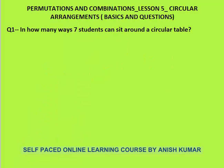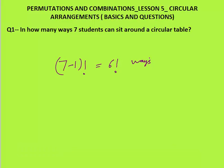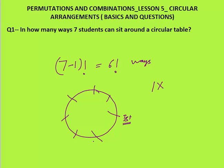Let's discuss some questions based on circular arrangement. Question 1: In how many ways can 7 students sit around a circular table? You can simply say that 7 different things arranged in a circle → (7−1)! = 6 factorial ways. First person can sit in 1 way, remaining 6 have different positions and can be placed in 6 factorial ways. That is the final answer.